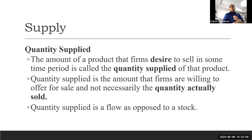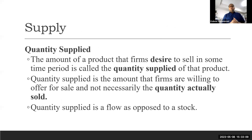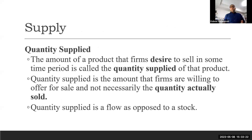As we discuss demand, supply has the same ideas, like quantity supplied. The amount of product that the firm desires to sell in some time period is called the quantity supplied of that product. Quantity supplied is the amount that firms are willing to offer for sale, and not necessarily the quantity actually sold. The actually sold and the quantity supplied are two different things, and this idea can be explained from the stock and flow concept, which we did on the demand side.